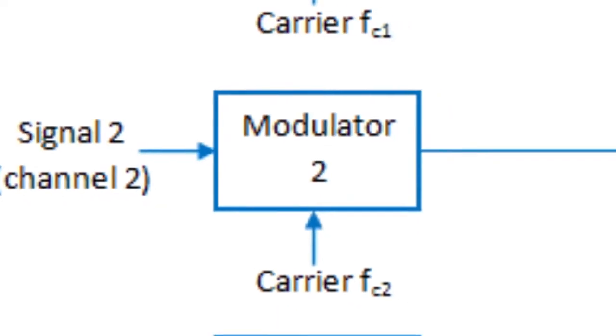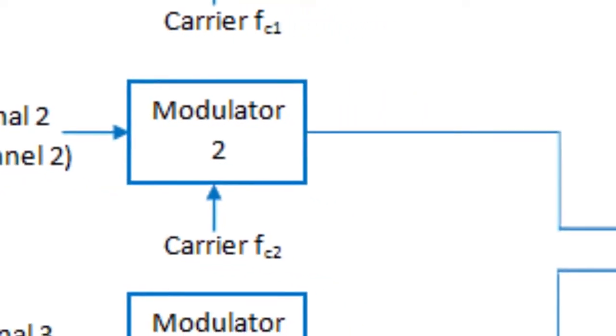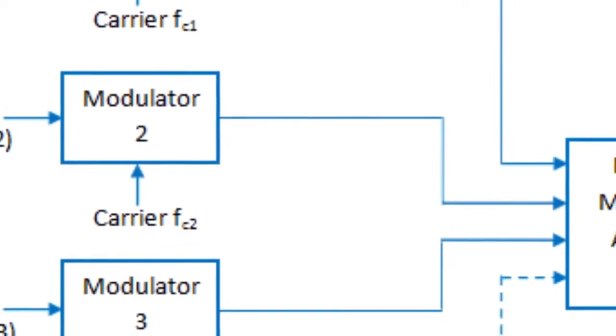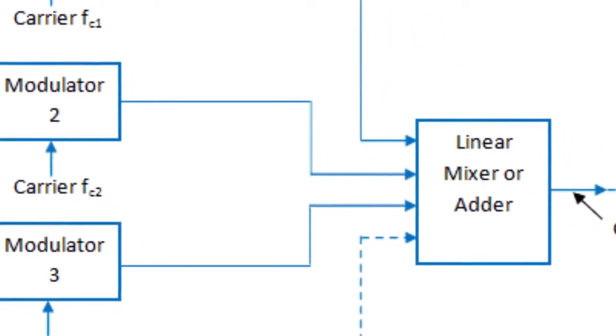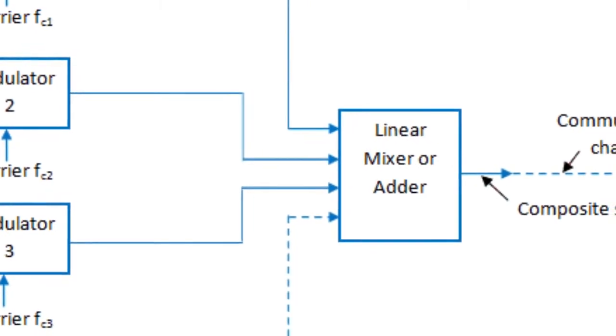Frequency division multiplexing is a signal transmission technology in which multiple signals can simultaneously be transmitted over the same line or channel.